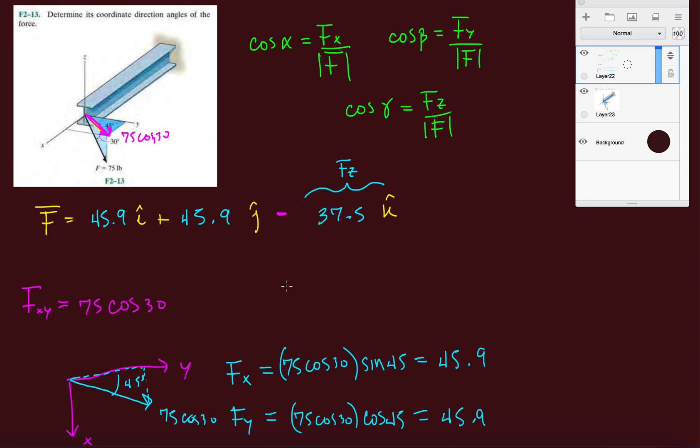Those are my components. Now we want to determine each coordinate angle. Cosine alpha is going to be 45.9 divided by the magnitude of that vector, which is 75. Cosine beta is the same thing: 45.9 over 75. Last but not least, I have minus 37.5 over 75.